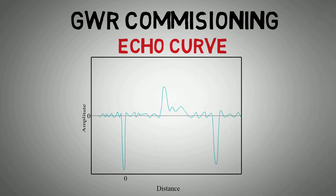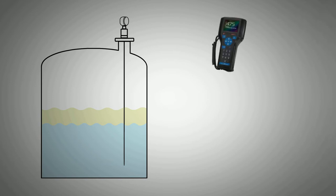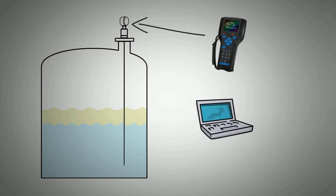The echo curve is a visual graph form representation of the microwave reflection strength plotted over time. The echo curve is usually viewed via a connected communicator such as a HART 475. Alternatively, some manufacturers use a laptop with proprietary software installed during commissioning or fault finding.